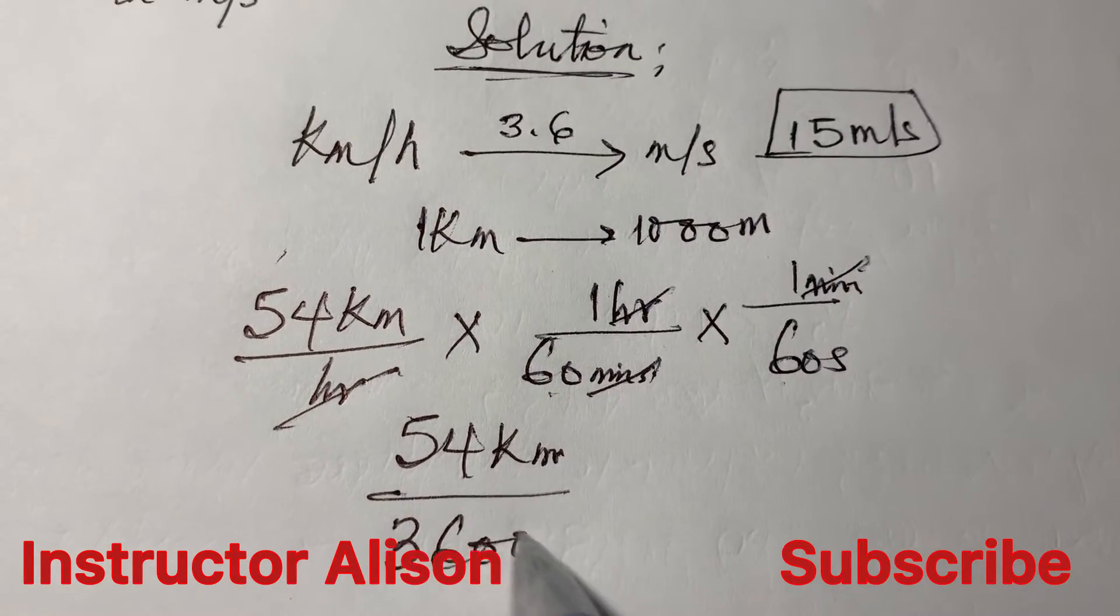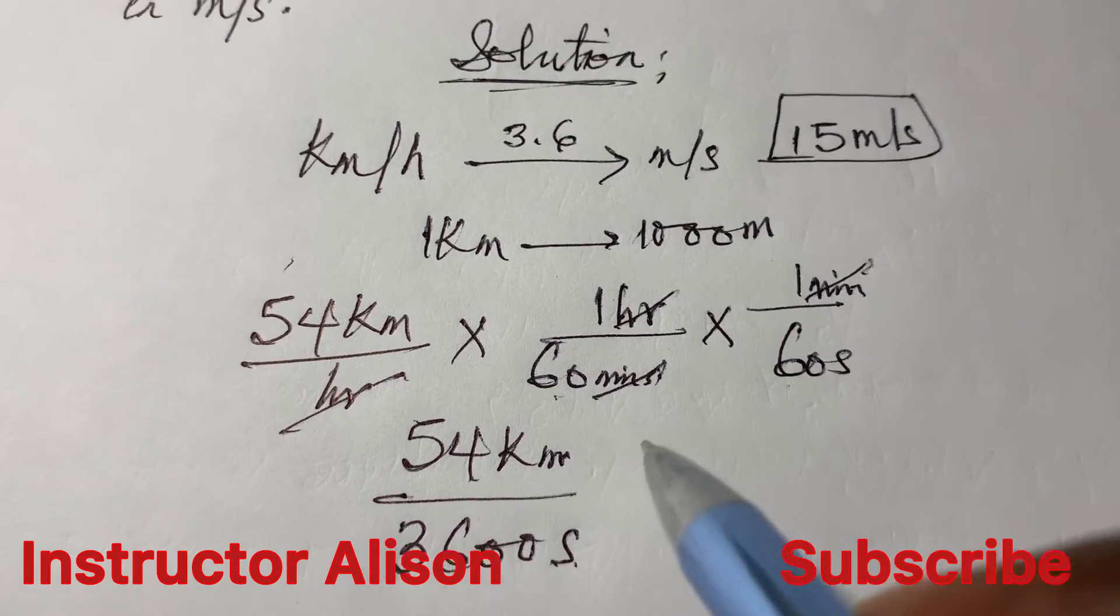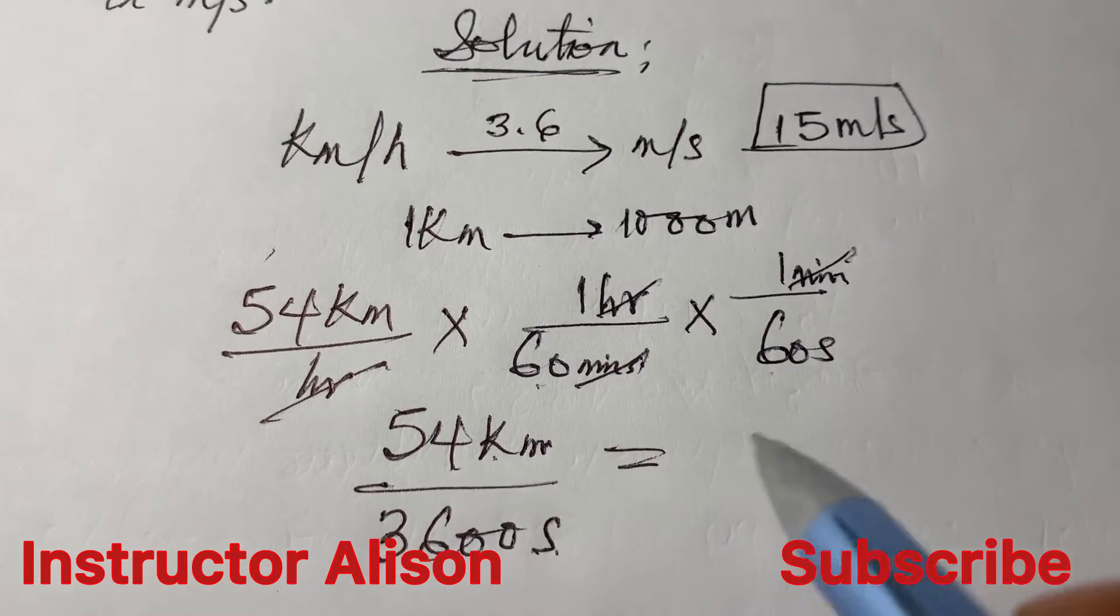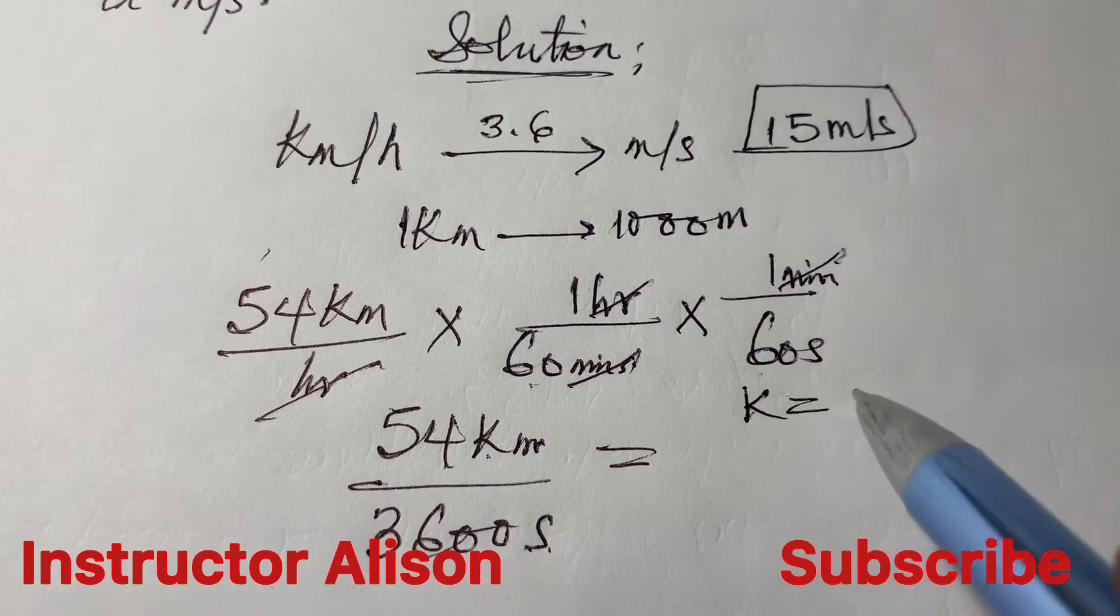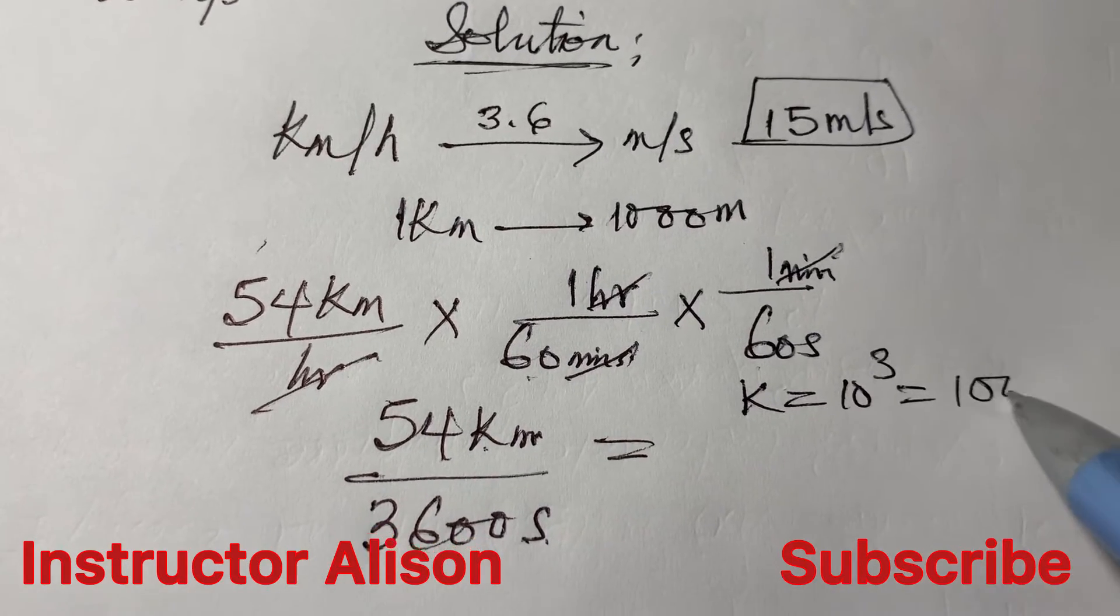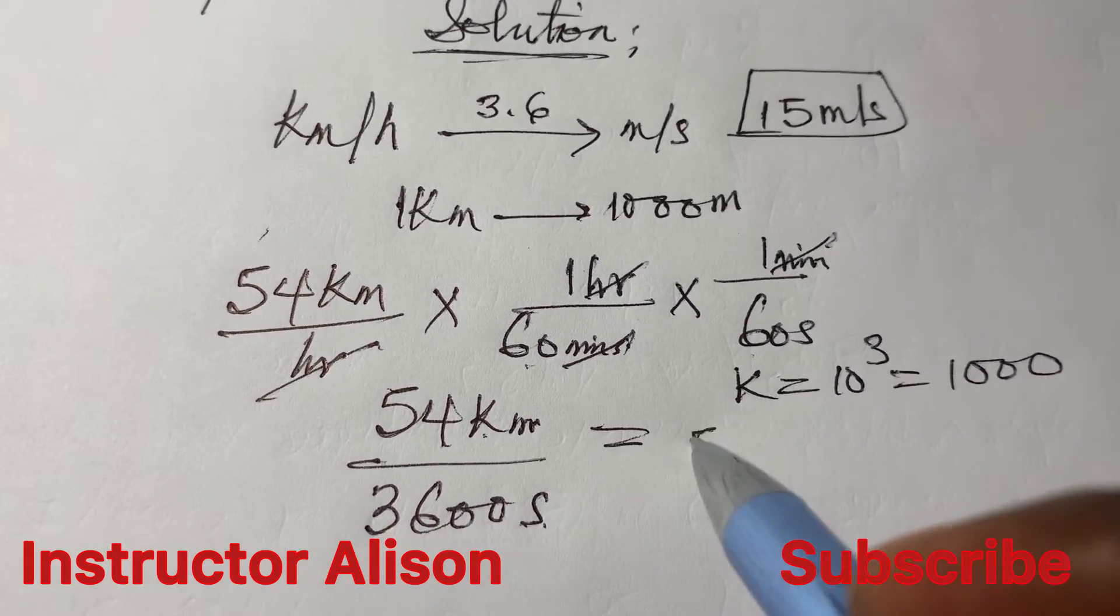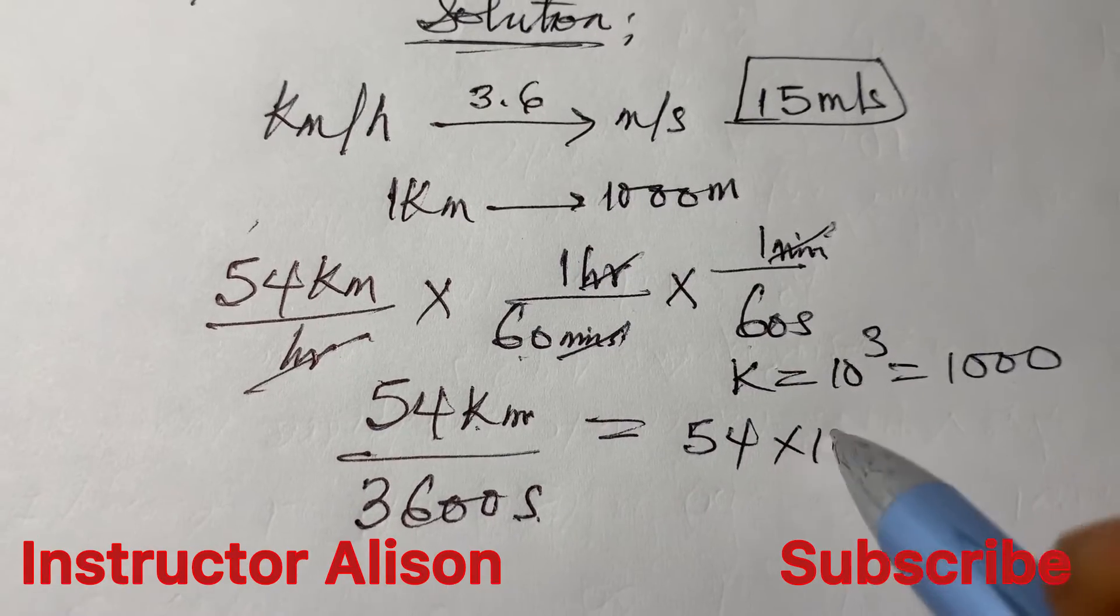But what exactly is kilo? Kilo stands for 10 to the power of 3, which is the same thing as 1000. So 54 multiplies by 1000 and then divide that by 3600.